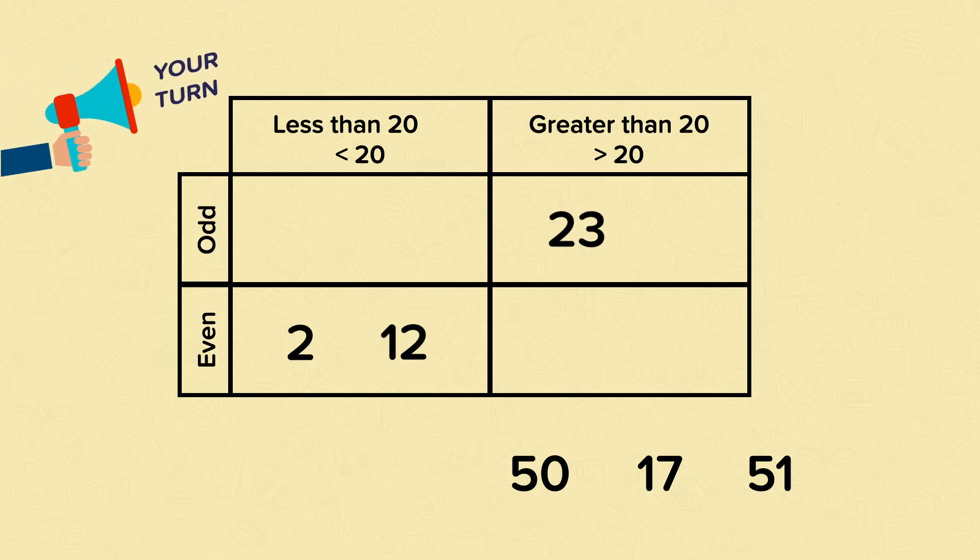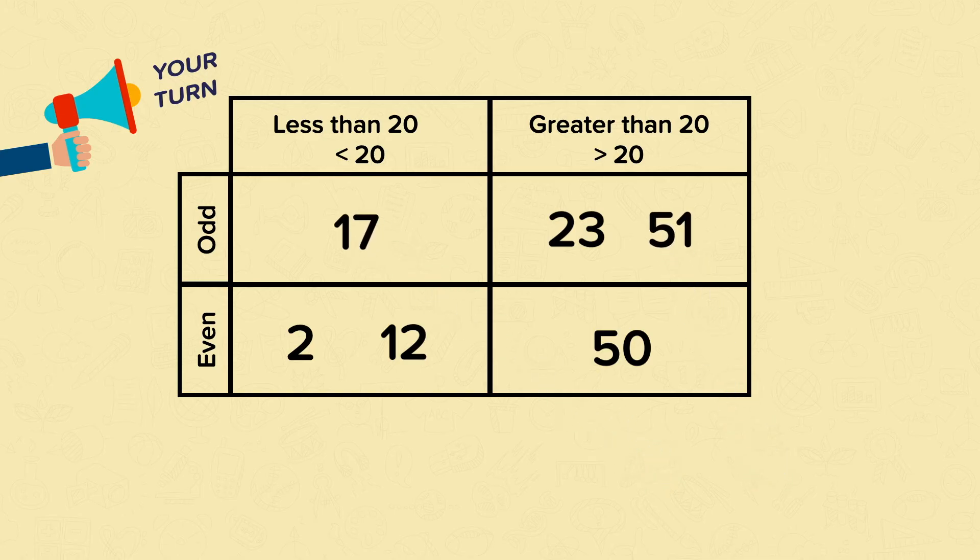Now it's your turn to sort fifty, seventeen, and fifty-one into the Carroll diagram. Pause the video if you need to. Well done if you moved fifty here, seventeen here, and fifty-one here.